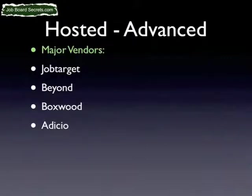Major vendors in this space include JobTarget, Beyond.com, and Boxwood — Boxwood primarily deals with professional associations. There's also Adichio, which is a rather expensive version. JobEx (J-O-B-E-X) is another vendor — I think they have a $99 a month product but also a more expensive one. These are some of the top vendors you can check out, and I will be publishing a full list of vendors on the blog at JobBoardSecrets.com.